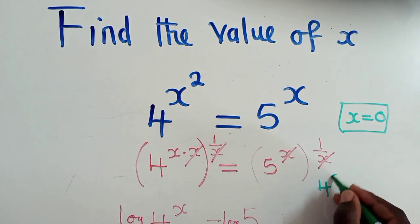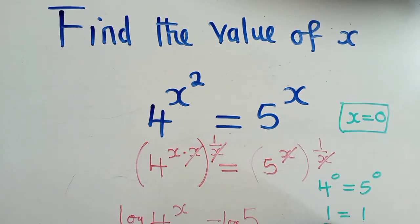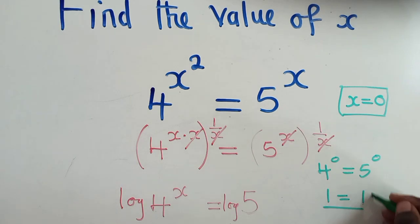it will look like this. 4 power 0 is equal to 5 power 0, which will just give us 1, which is equal to 1. And this is our solution.